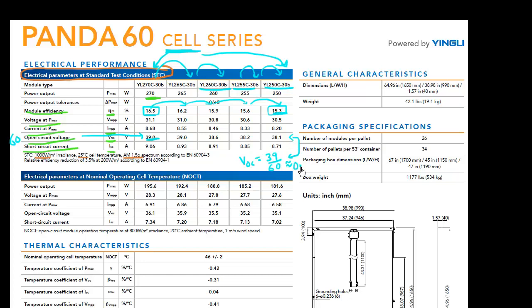This corresponds to a VOC of each individual cell to be approximately 39 by 60, or approximately 0.65 volt. So that's the VOC of my one of these silicon cells. And that sounds approximately right, given that these are made out of silicon.